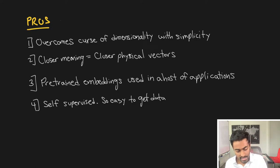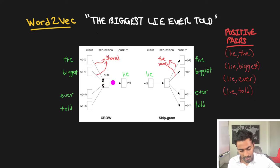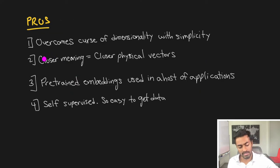On the other hand here we're able to learn a very compressed representation of words and so pairwise distances in the embedding space become more meaningful. This transitions well into the second pro of closer meaning equals closer physical vectors. Another cool thing is that pre-trained embeddings can be used in a host of applications. Even in the industry today there's a lot of applications that would just take words, map them to their vectors to get that vector representation and use it directly in their application.